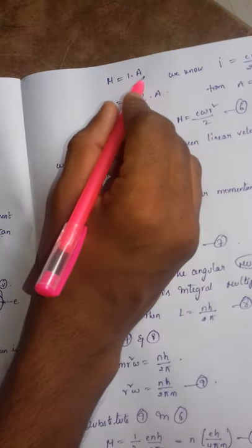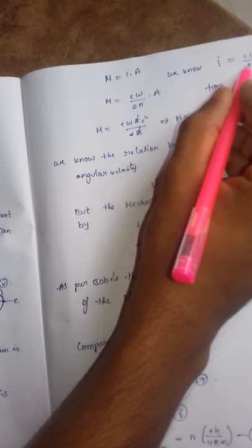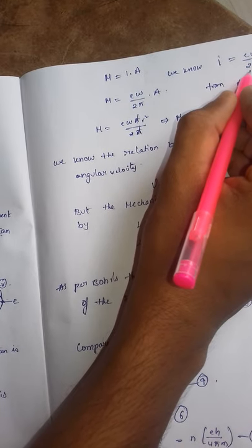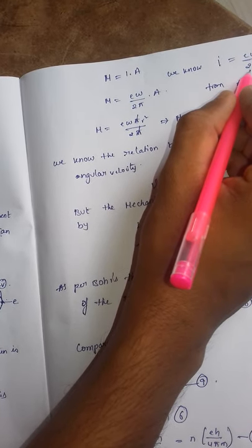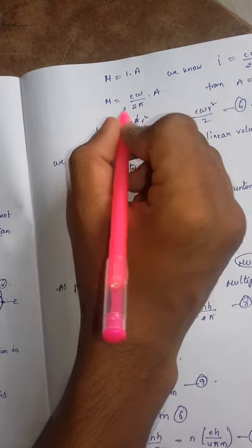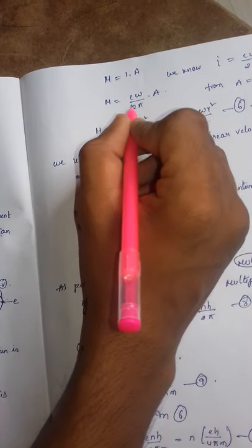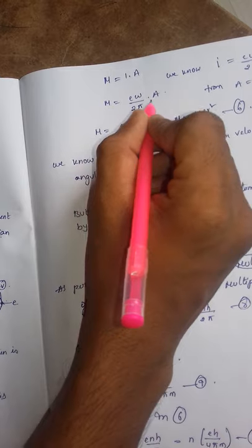From that, M equals to IA. We know that I equals to E omega by 2π from equation 4. Therefore, M equals to E omega by 2π times A.